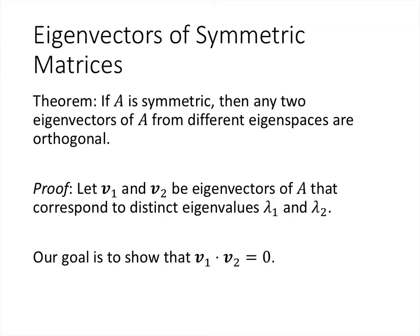So it makes sense to start thinking about eigenvectors and eigenvalues of symmetric matrices. One nice theorem is that if A is a symmetric matrix, then any two eigenvectors of A from different eigenspaces are orthogonal. An eigenspace of A is simply the set of all vectors associated with that particular eigenvalue. So if we have two eigenvectors for different eigenvalues, those two eigenvectors must be orthogonal to each other.